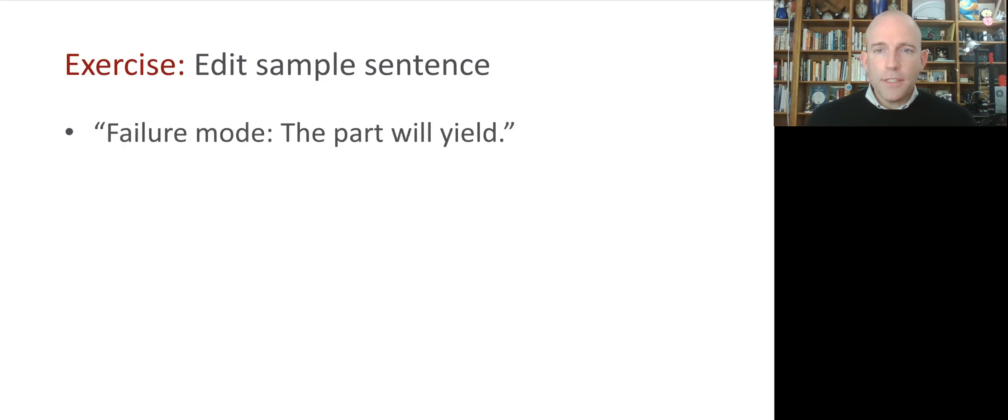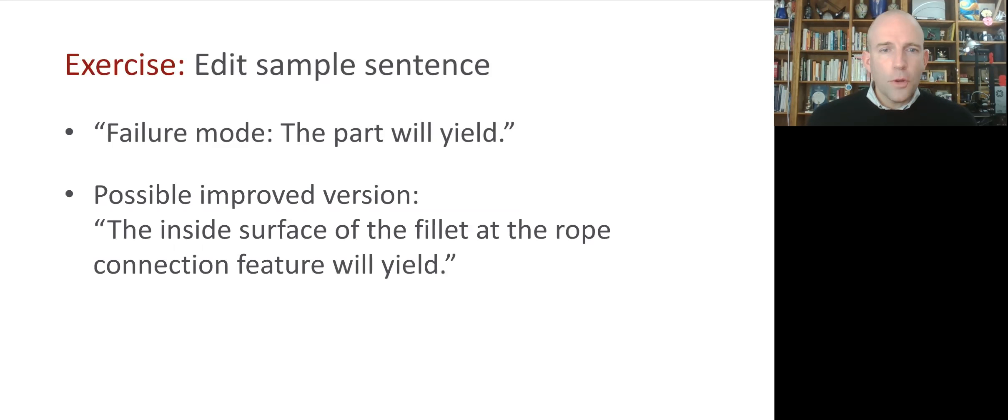All right. Here's another example. This is from the failure mode estimation section of our report. So, the prompt is, in a few words, how will your part fail when overloaded? So, take a look and think about how you can improve it. Okay. So, here, there just isn't very much information. This is quite vague. So, it would be improved by adding some more information, like, the inside surface of the fillet at the rope connection feature will yield. All right. So, those are some examples of how you might edit text to make it better.